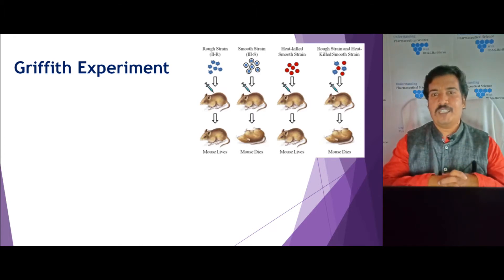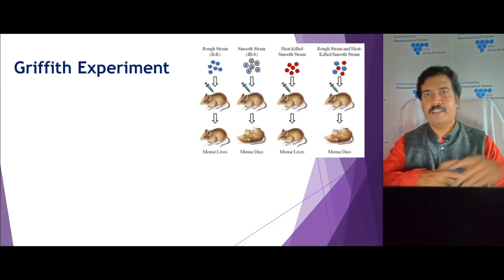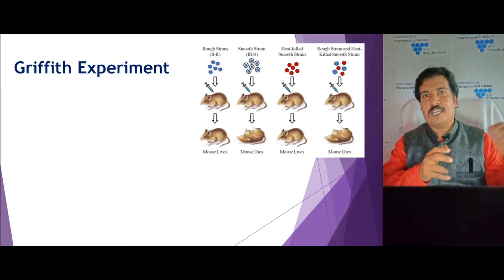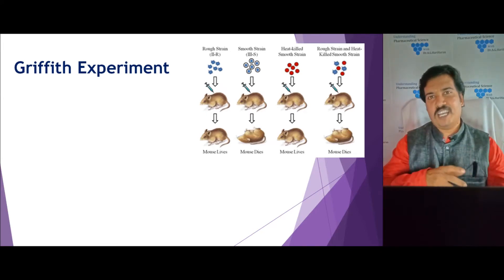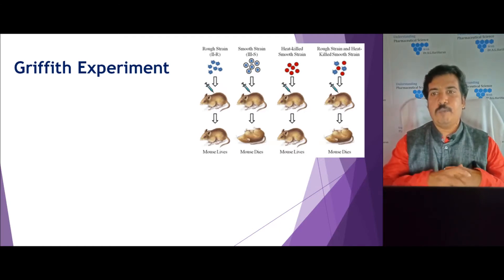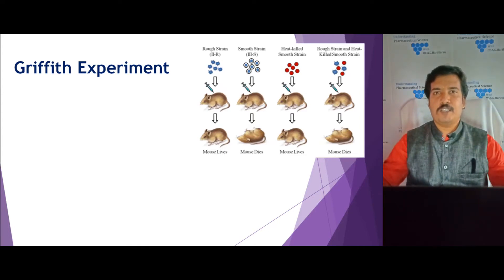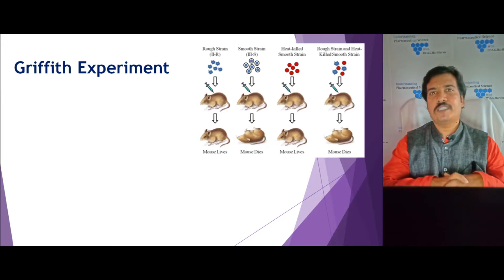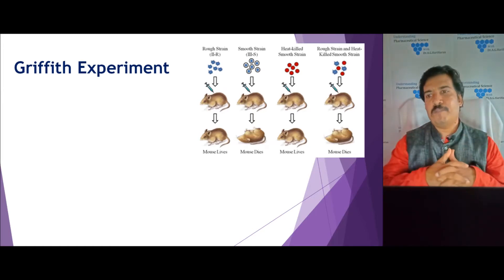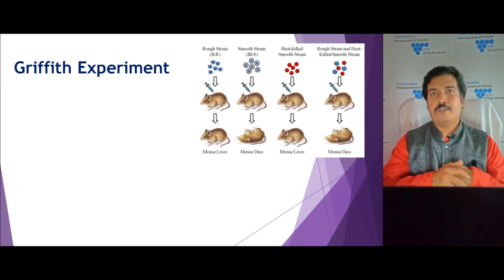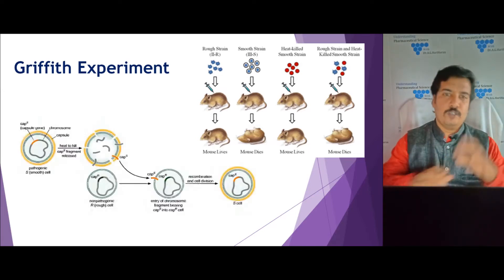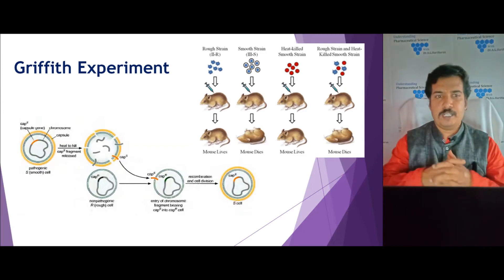In the final group, he mixed the heat-killed smooth strain with the rough strain — both of which individually had left mice alive — and injected the mixture. The expected result was that the mouse should be alive, but the mouse was dead. He found that the DNA from the heat-killed smooth strain was taken up by the rough strain and converted it to a smooth strain, thereby causing the death of the mice.